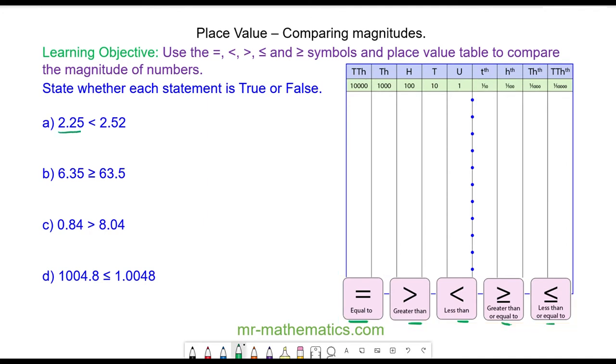So we have 2.25 which is two units, a decimal point, two tenths and five hundredths. And we have 2.52 which again is two units, five tenths and two hundredths.